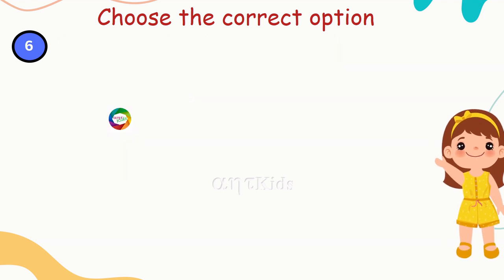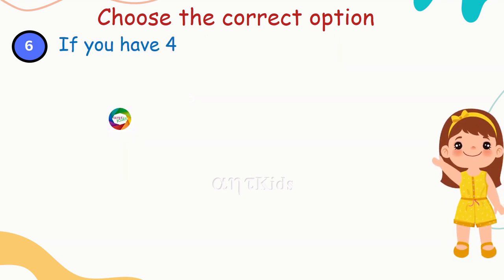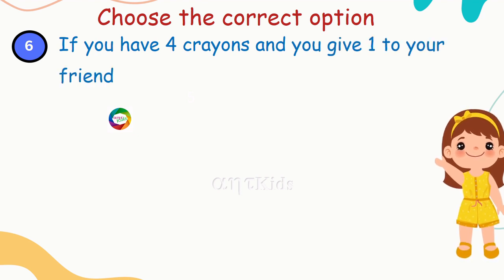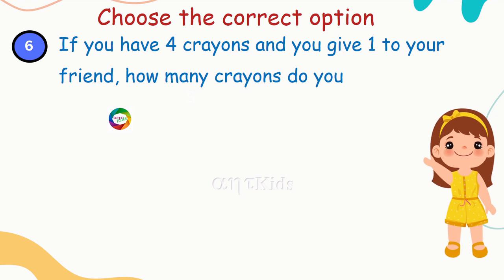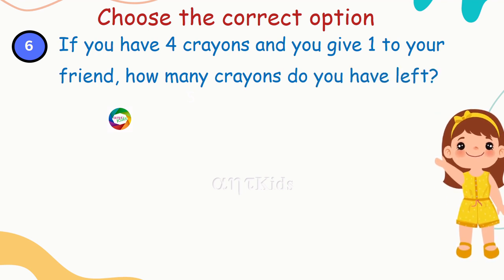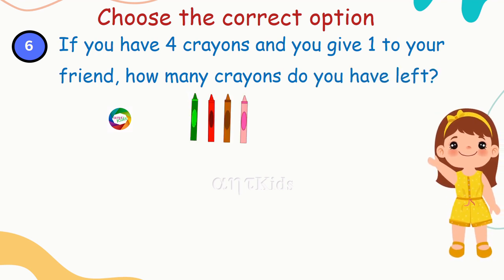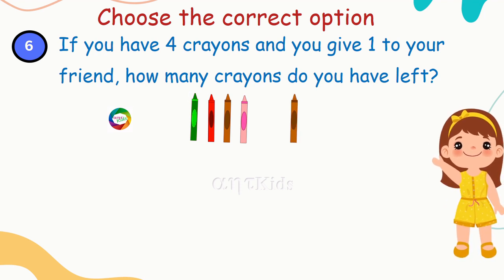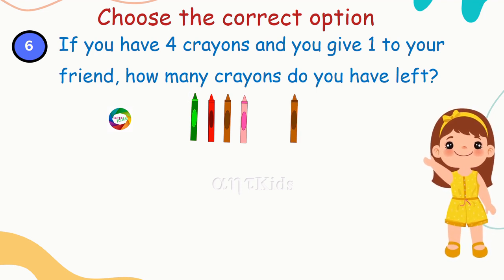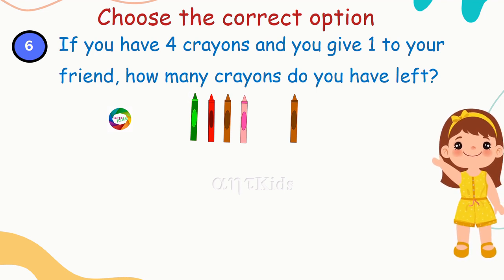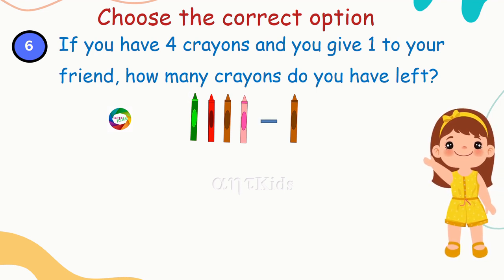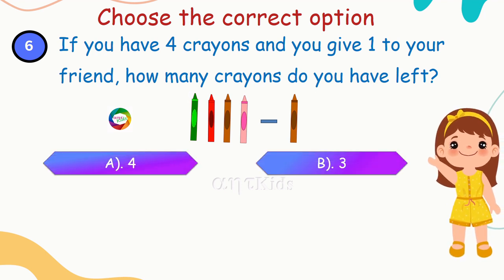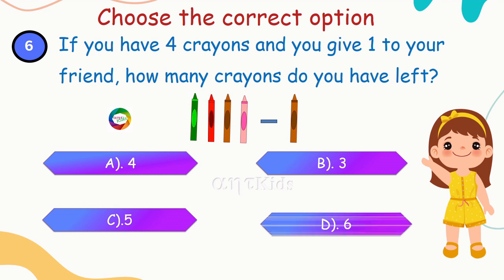Next question: if you have four crayons and you give one to your friend, how many crayons do you have left? You have four crayons and give one to your friend, so you have to subtract. Options are: 4, 3, 5, 6.